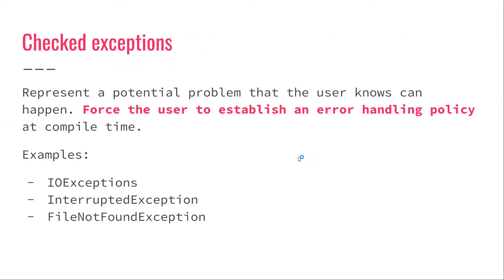What is a checked exception? Why do we call it checked? The checked exception represents a problem that the developer is aware of in advance. So if I create a method and I know that there is a chance that something can go wrong, and I know the elements that can lead to that event, then I can create a checked exception to signal to other users of my code that that particular event can happen. When I'm doing this, I'm basically forcing the user to establish an error handling policy.